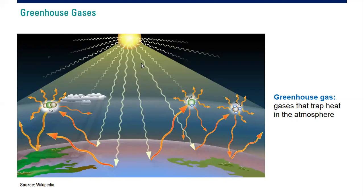Some of that heat is absorbed by the Earth, and some is reflected out to open space. However, because of the accumulation of greenhouse gases in our atmosphere, much of the heat that should be reflected is instead absorbed and trapped. The impact, of course, is that the temperature of the Earth increases due to this trapped heat.